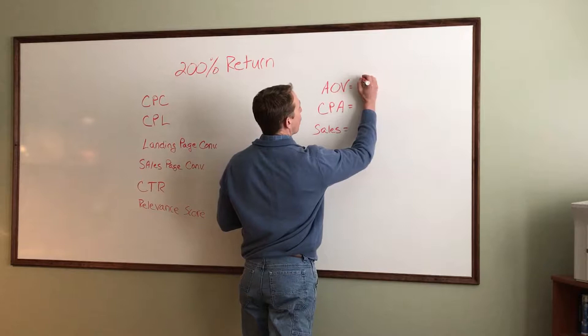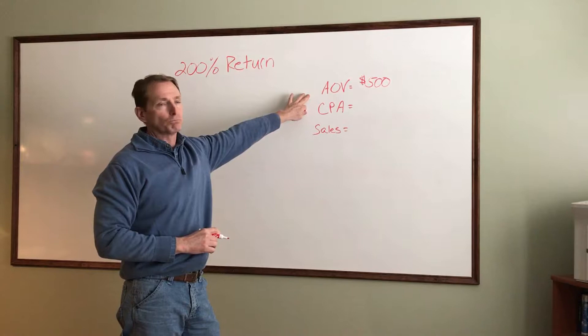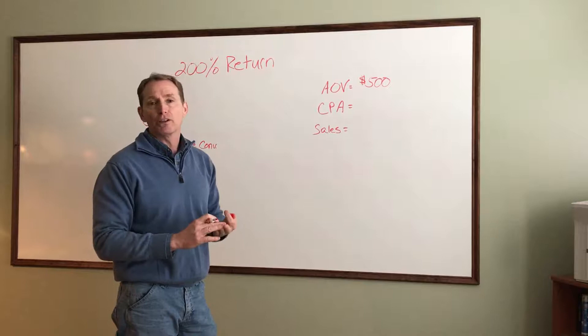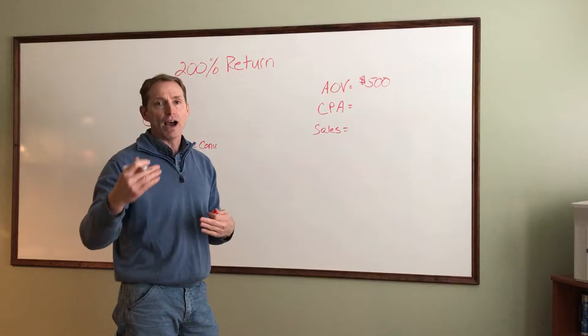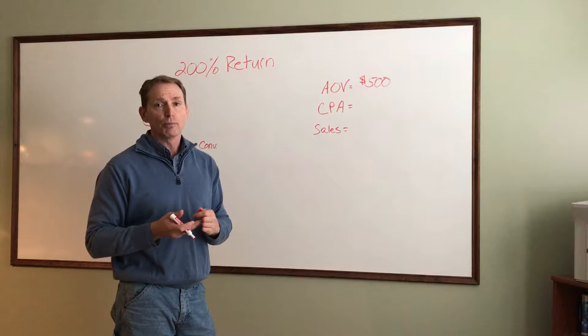If you're running the Ascension model, where you're running an ad, sending people to a landing page, getting them to opt in, hitting your thank you page, and upselling them on your thank you page — offering something of a higher dollar, then higher, then higher — what you're going to do is take all of your products and services, add them together, and divide by the number of products and services you have. That gives you your average order value and benchmark numbers to work off of for your ads.